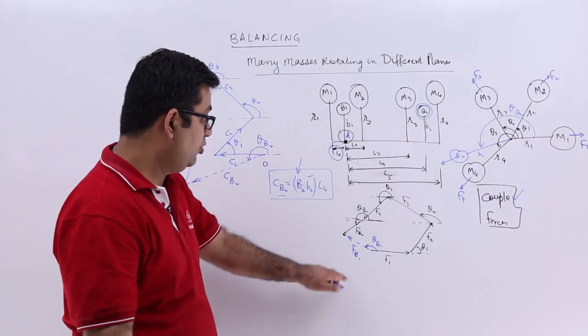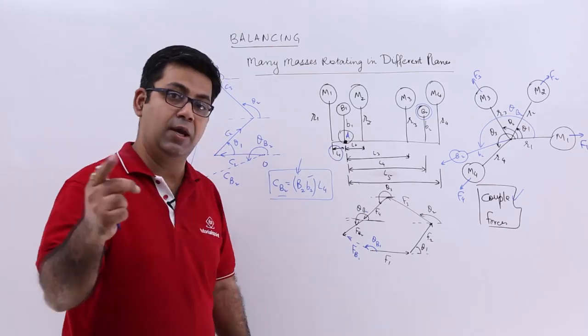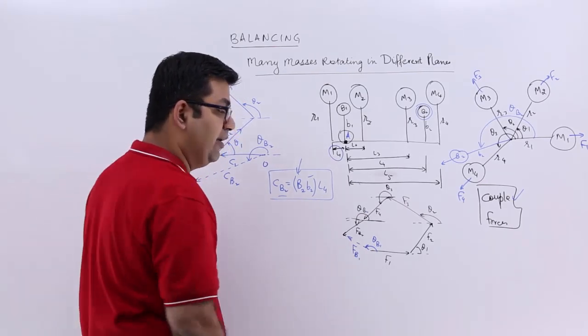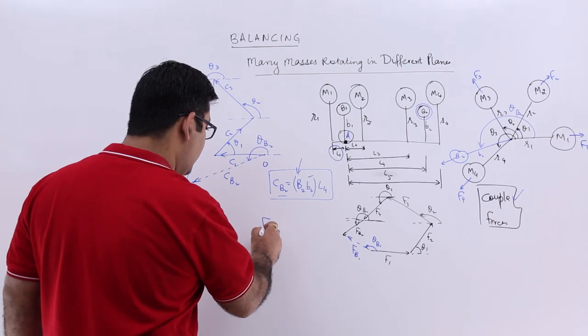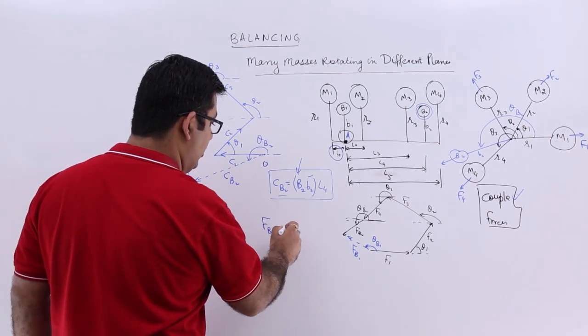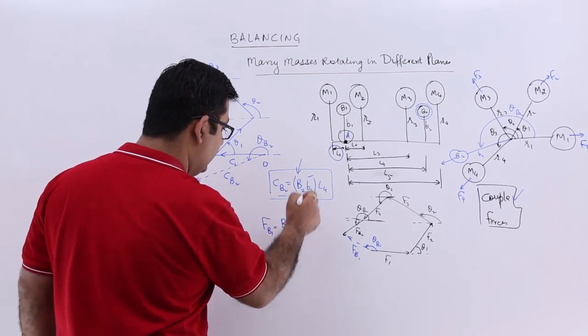And this orientation is theta B1. So with the help of the scale, you calculate FB1.